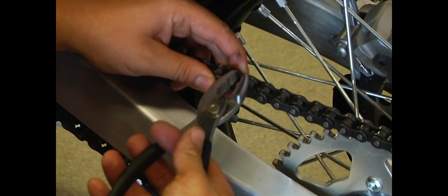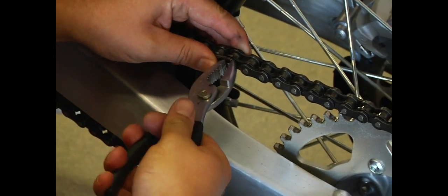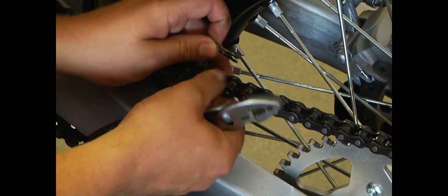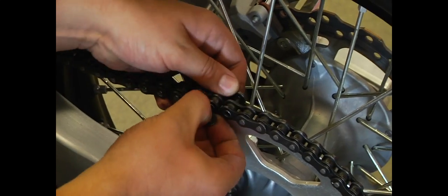So first we're going to remove the master link. You pull the clip and then on the stock one like this, the stock plate should come right off.